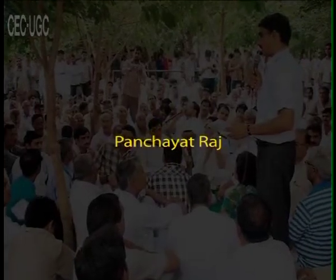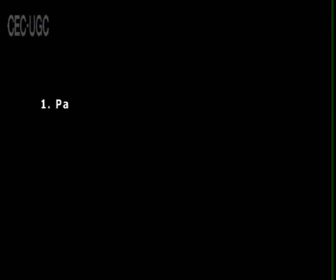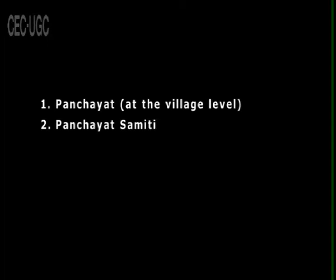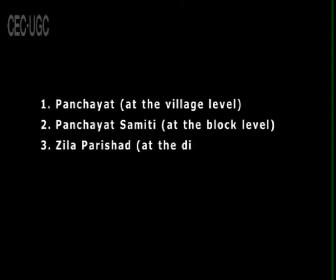Now we have Panchayati Raj. The Panchayati Raj is a three-tier structure of rural local self-government in India, linking the village to the district. It includes: number one, panchayat at the village level; number two, panchayat samiti at the block level; and number three, Zila Parishad at the district level.